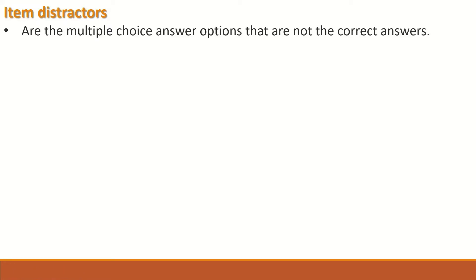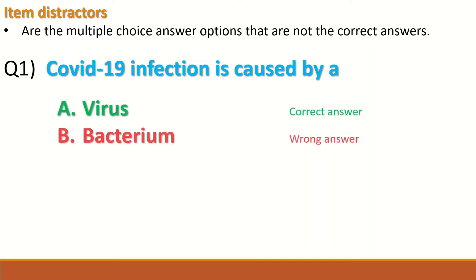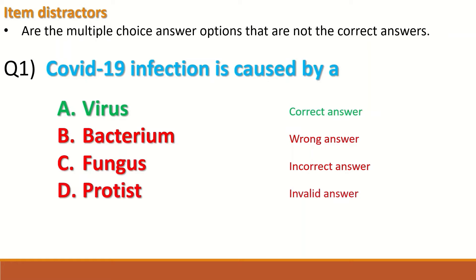Item distractors are the multiple choice answer options that are not the correct answers. This is an example of a multiple choice question: Question one, COVID-19 infection is caused by, and there are four possible answer options: A, B, C, D. A is the correct answer and B, C, and D are the incorrect answers. So B, C, and D are called the distractors because they distract the student from selecting the correct answer, which is A, and attract them to select the wrong answer, which is B, C, or D.